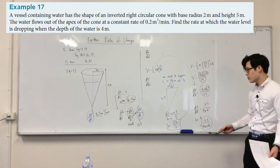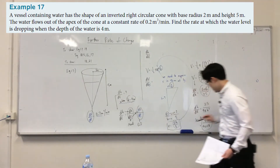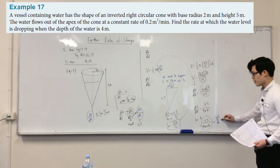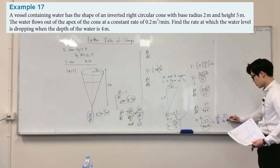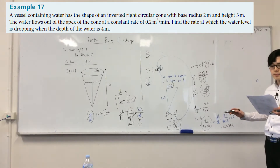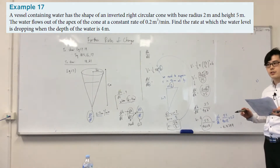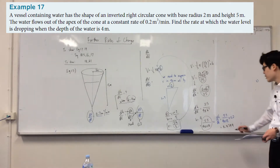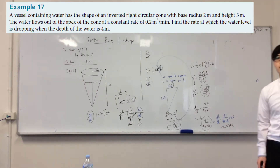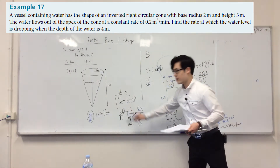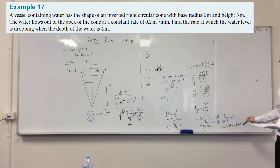Now it's just calculator work to get the final answer for dh/dt. Read the last line of the question — it says the water level is dropping, so put a minus sign in front of the number, because anything dropping or decreasing gets a negative. The units are meters per minute.